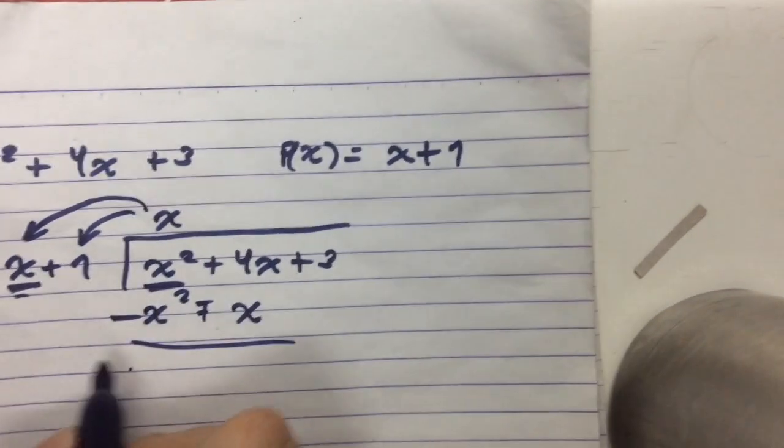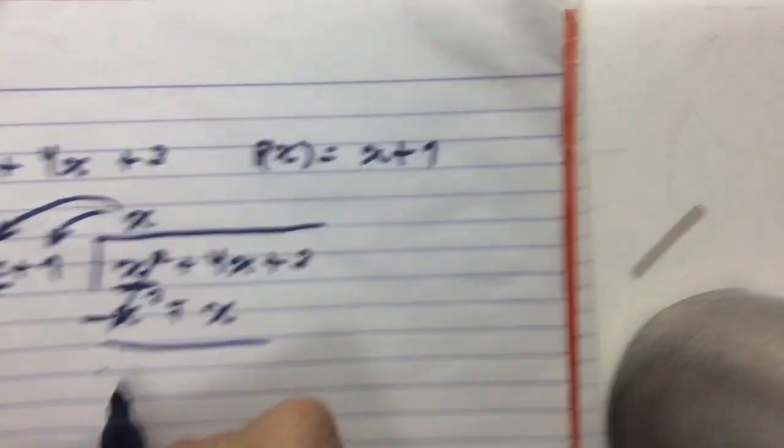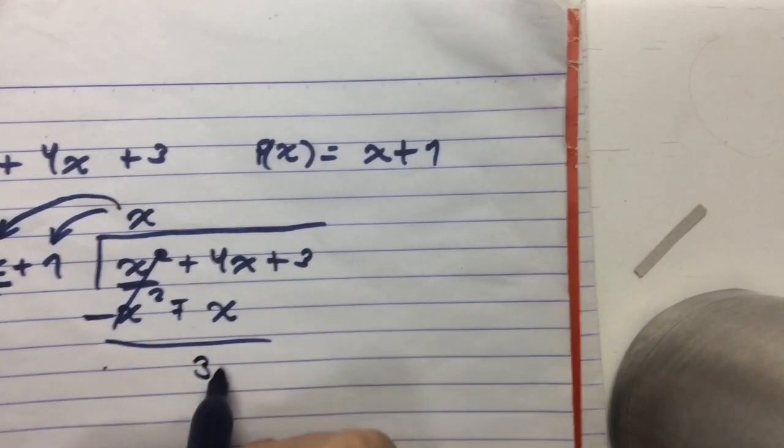And after that, we just subtract. So this would cancel out to zero and 4x minus x would be 3x.